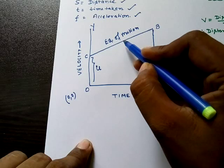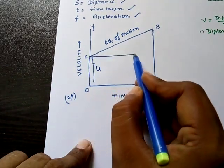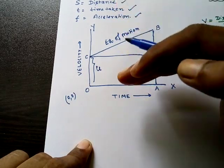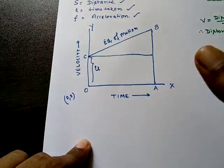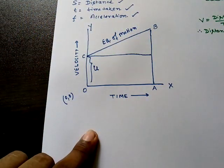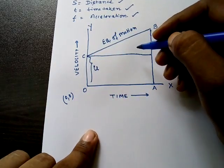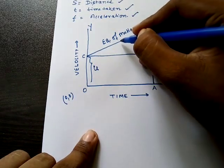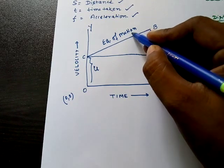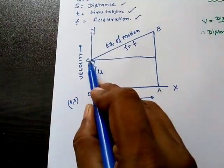The line is not parallel to the time axis — it is oblique — because the body is moving with acceleration. If the line were parallel to the time axis, there would be no acceleration. Moving from left to right along the time axis, the line moves upward, meaning velocity is increasing, so acceleration f is not zero.